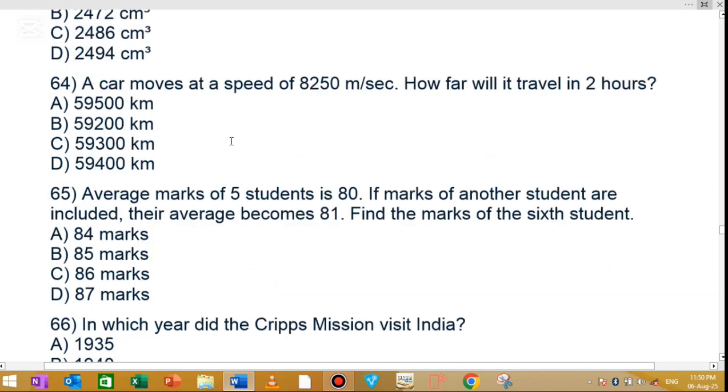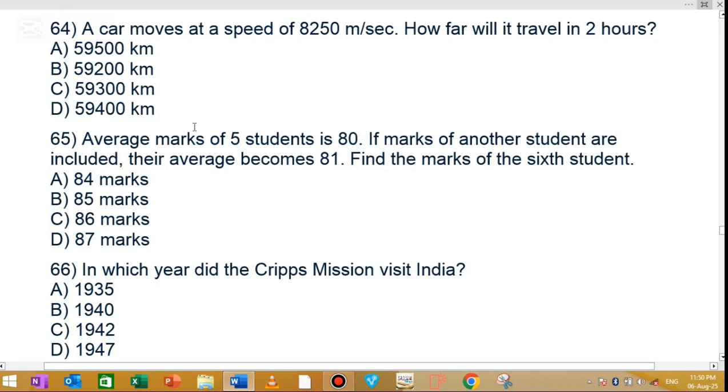MCQ number 64: A car moves at a speed of 8250 meters per second. How far will it travel in 2 hours? The correct answer is 59400 km. Option D is the correct answer.